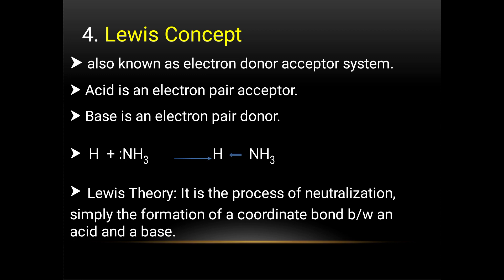The fourth theory is the Lewis theory, also known as the electron donor-acceptor system. According to Lewis, an acid is an electron pair acceptor and a base is an electron pair donor. In ammonia, there is a lone pair of electrons; this lone pair acts with H to form NH3·H.